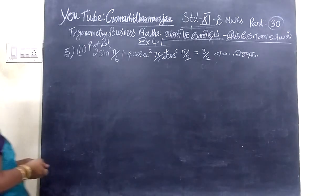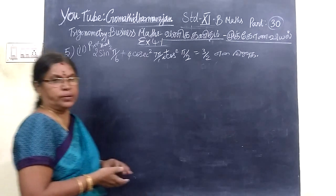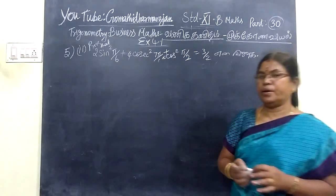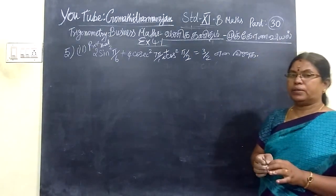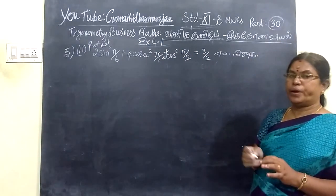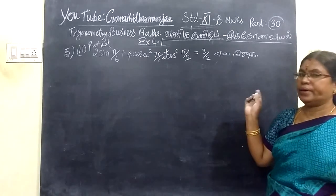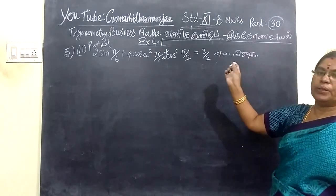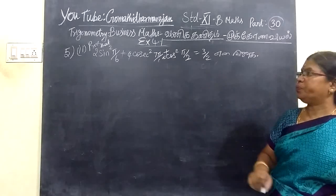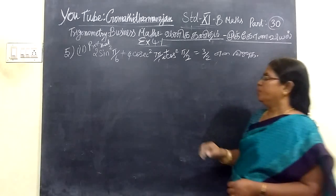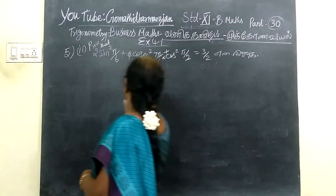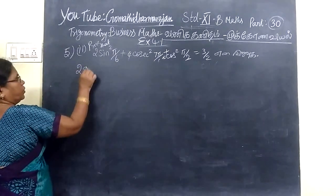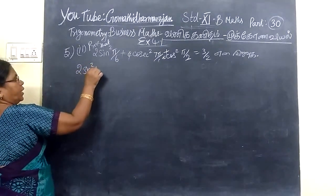We will give you a part of the research method exercise 4.1, the trigonometry chapter. We need to find the value. Given that it is to be 3 by 2, we will solve it step by step. So 2 times sin(5π/6).